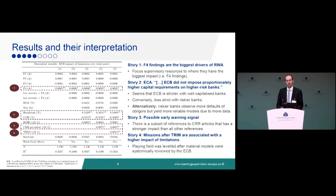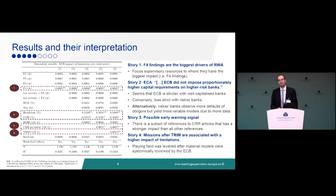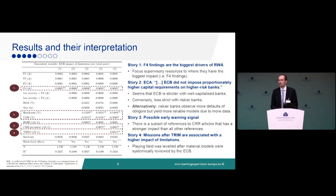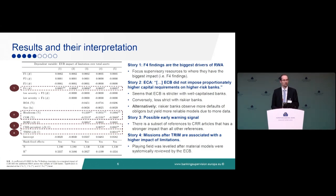Taking it one step further: we also want to understand the link to specific CRR articles — what specifically is the non-compliance about. We find a subset of articles we call 'CRR prevalent' that serve as an early warning: if you're non-compliant with a particular part of the CRR, this is more likely to lead to a limitation being imposed on your model. On the topic of TRIM — the Targeted Review of Internal Models — we find that after it was completed and the playing field was leveled, model inspections that preceded it came along with higher capital impacts.